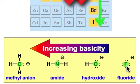Having the most stable anion means it has the lowest affinity for a proton, making it the weakest base. Fluoride is the weakest base, while the carbon anion is the strongest base.